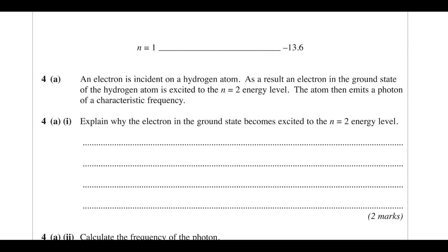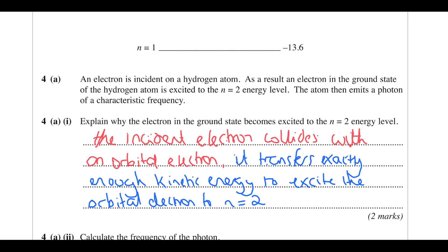The atom then emits a photon of a characteristic frequency. Explain why the electron in ground state becomes excited. The incident electron collides with an orbital electron — the one in ground state — and transfers exactly the right amount of kinetic energy to excite the orbital electron to n = 2. In quantum physics, excitation requires exact amounts of energy, so exactly the right amount would be transferred.